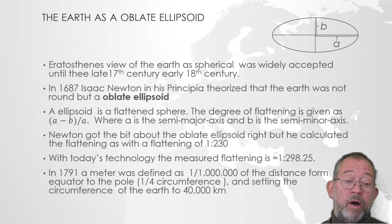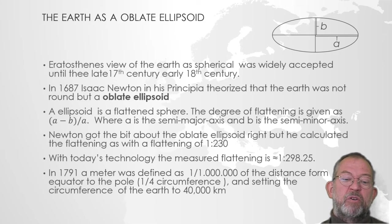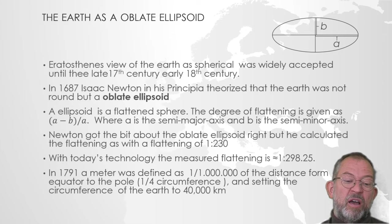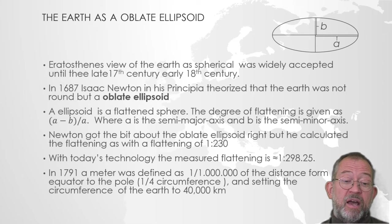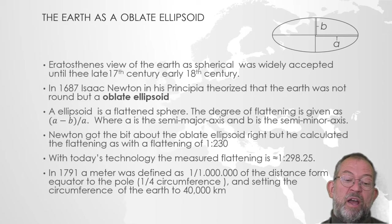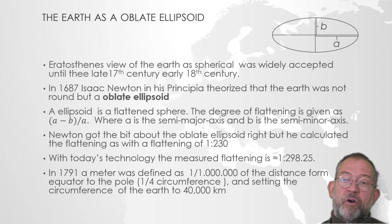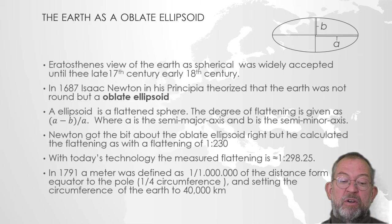In 1791, during the period of the French Revolution, when everything had to be based on science instead of God, a metre was defined as one ten-millionth of the distance from the equator to the pole — a quarter of the circumference of the Earth — thus defining the circumference of the Earth to be 40,000 kilometres.